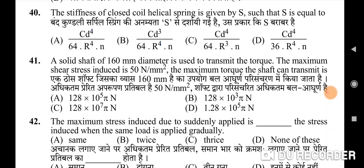Fortieth question: the stiffness of a closed coil helical spring is given by S = — correct option is A. Forty-first question: a solid shaft of 160 mm diameter is used to transmit torque; the maximum shear stress induced is 50 N/mm². The maximum torque the shaft can transmit — correct option is A: 128 × 10⁵ π N·mm.